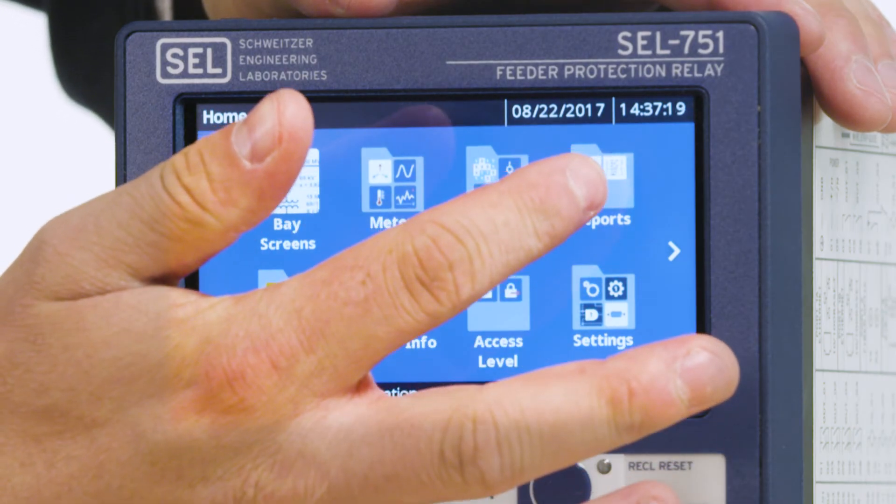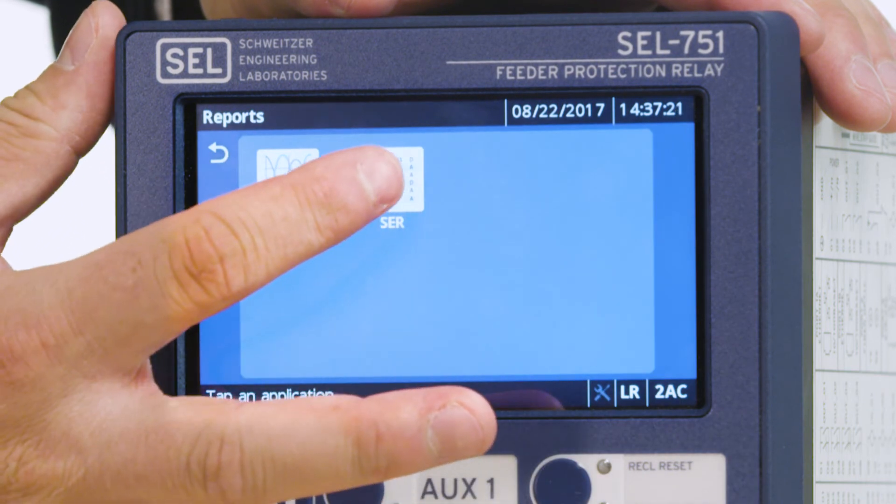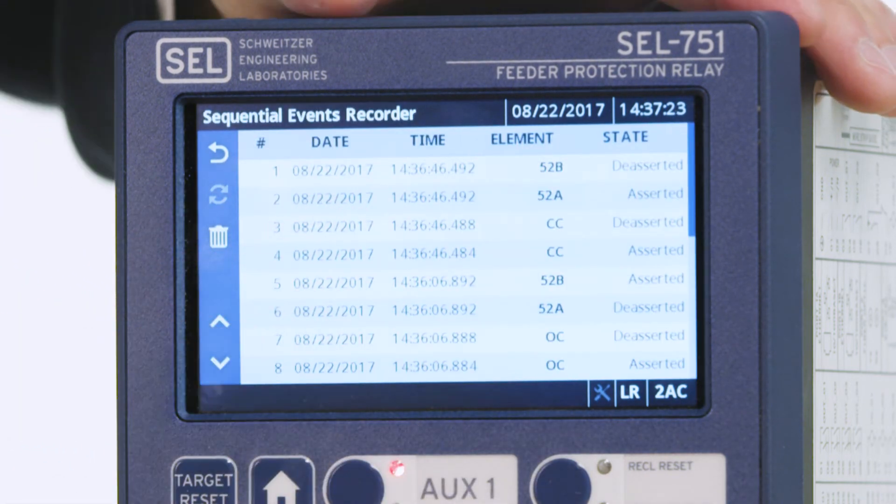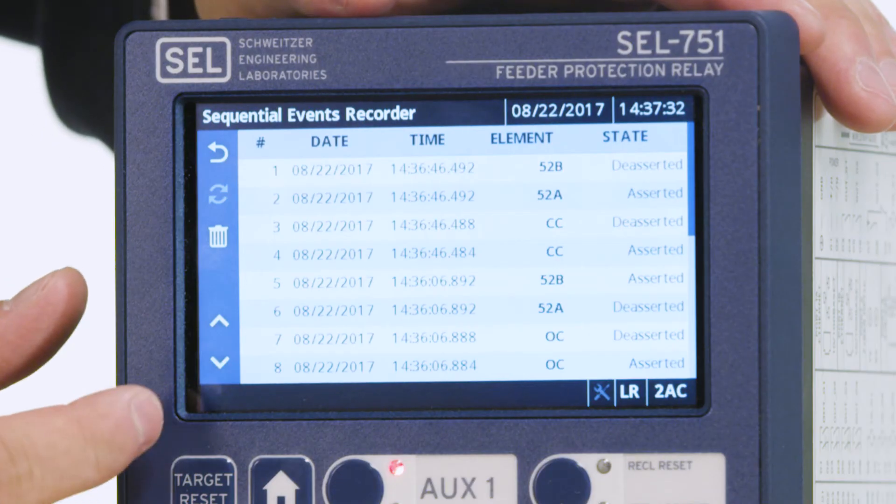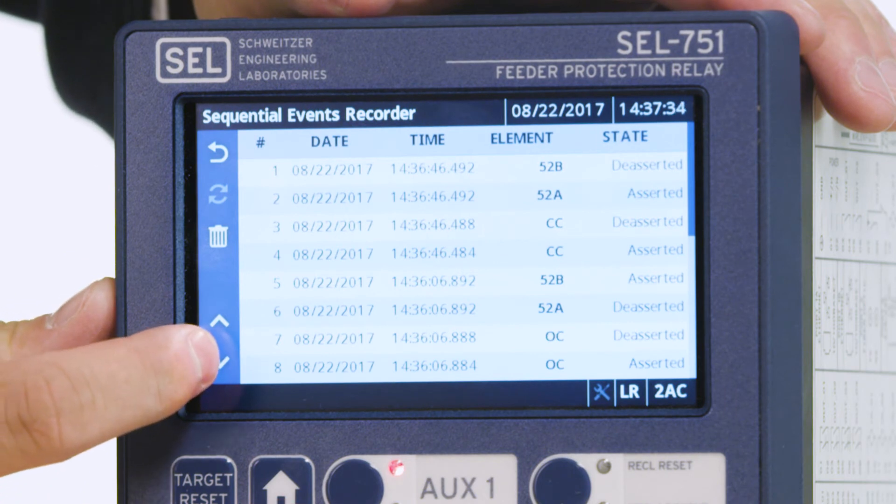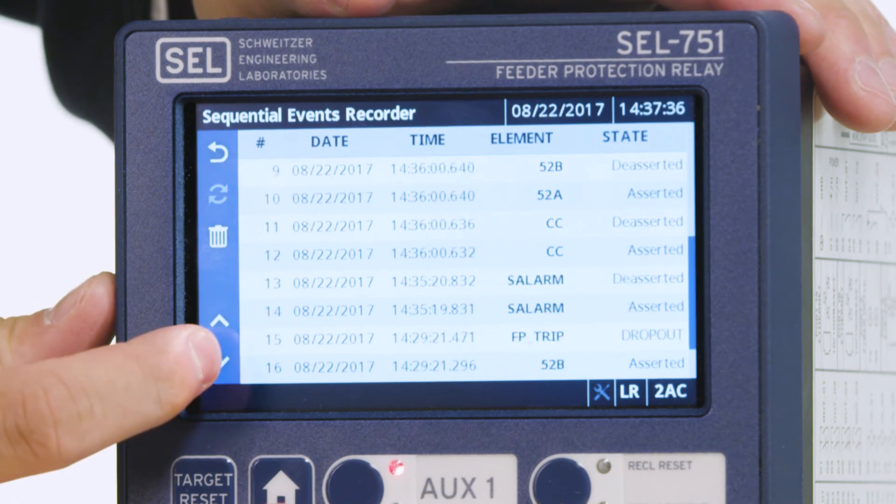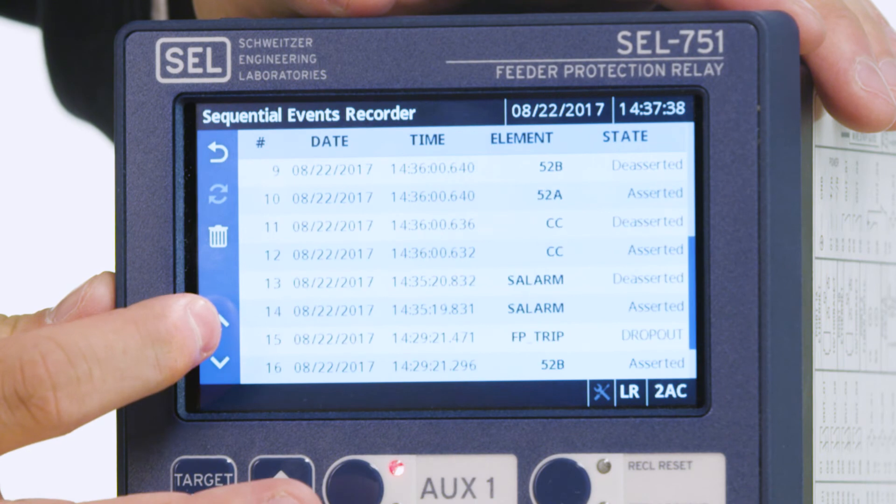Next, we are going to look at the SER application or the sequential event recorder. In the SER, you can log up to 1024 items. These items can be customized by the user. As you can see, we can scroll through the various SER log items.